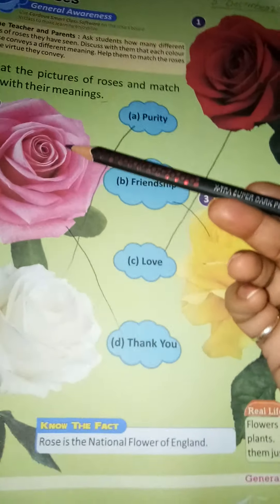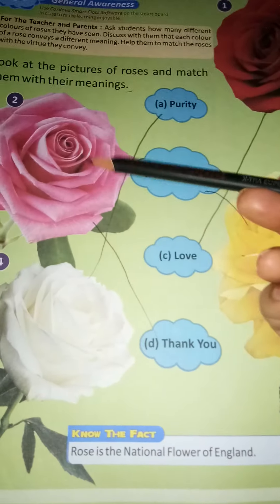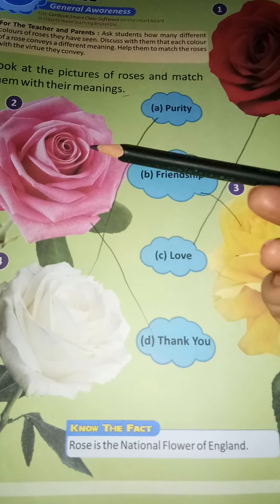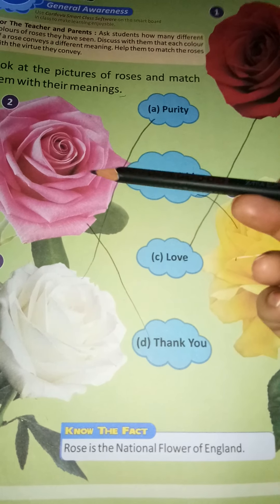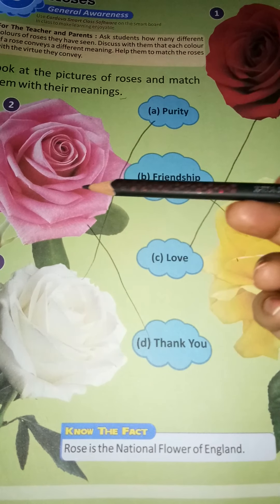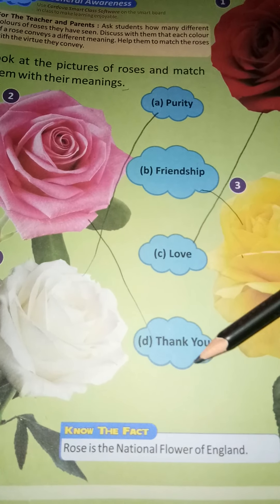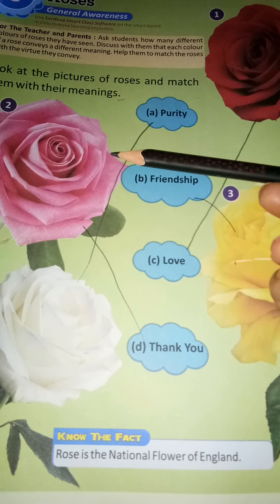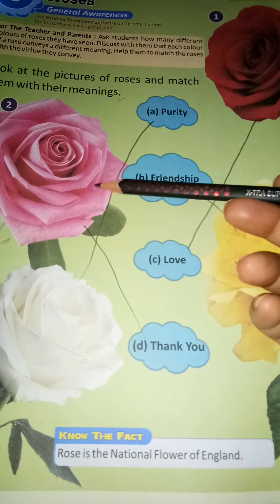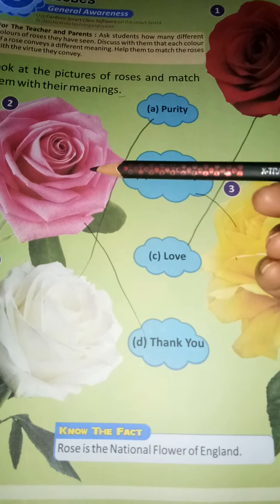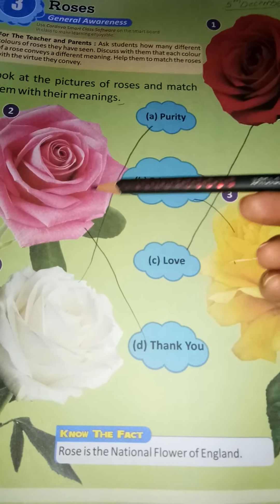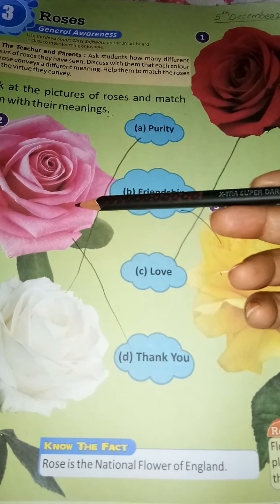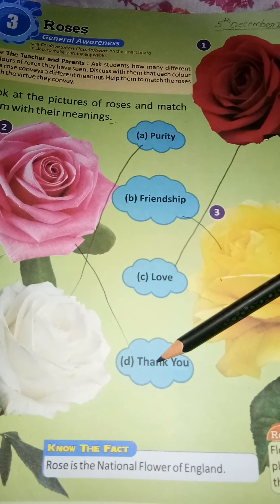Look at the first flower. Which color is this? This is pink — this is a pink rose flower. What is the meaning of the pink rose flower? Pink rose flower means thank you. If you want to say thank you, you can give a pink rose. Match it with option D. Pink rose means thank you.